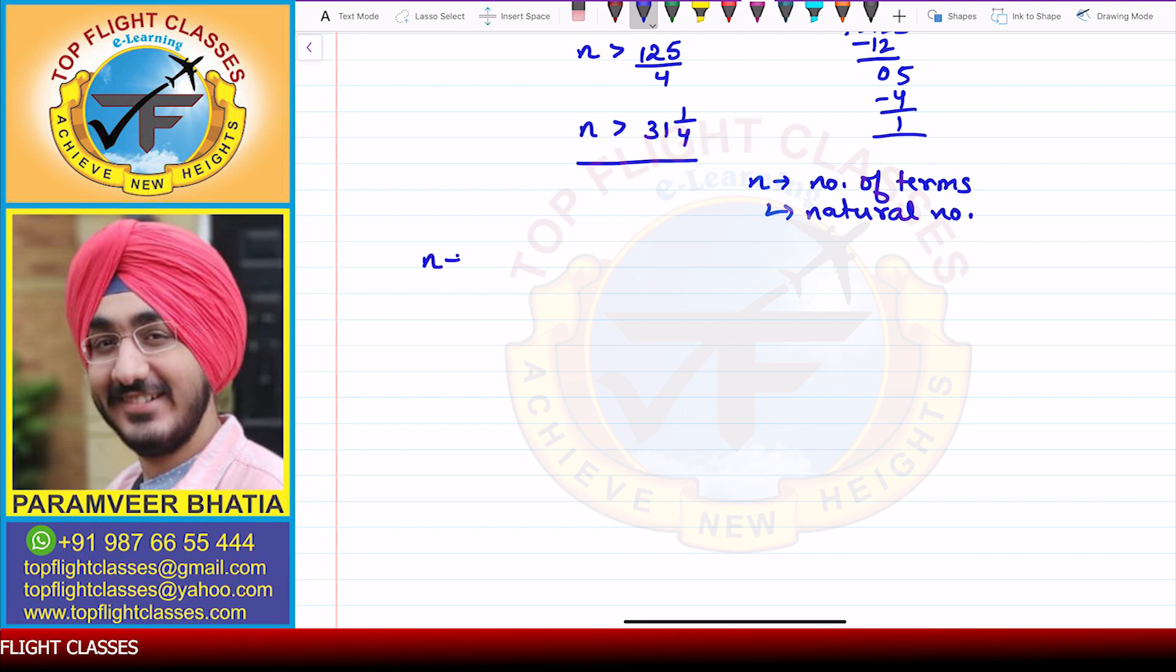That means N value is 32, 33, 34, and so on. And these numbers are all representing negative terms. That means A32 is a negative term.